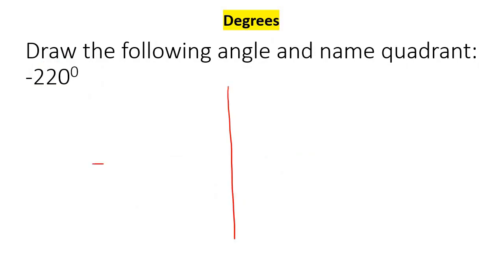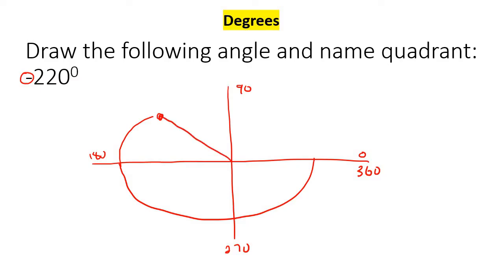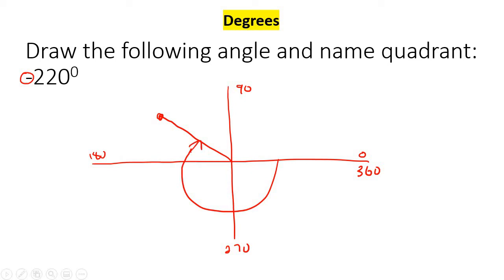Negative 220. So that's 0, 90, 180, 270, and 360. Because it's negative, you must go this way — backwards. So you're going to go 220 degrees that way. This is 180 degrees, and then you'll just go an extra 40 up to there. Put a little dot and draw the line. And this is in quadrant number 2.